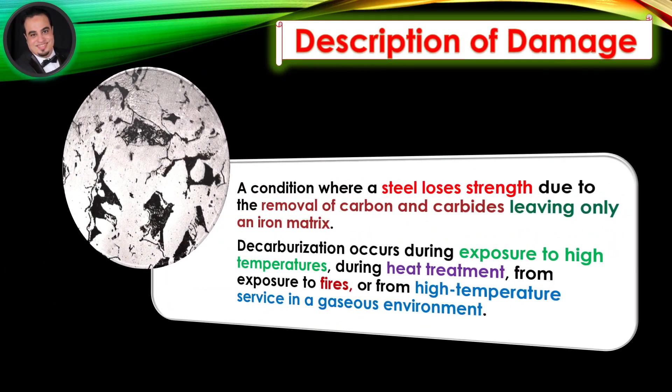Description of damage: Decarburization is a condition where a steel loses strength due to the removal of carbon and carbides, leaving only an iron matrix. Decarburization occurs during exposure to high temperatures during heat treatment, from exposure to fires, or from high-temperature service in a gaseous environment.